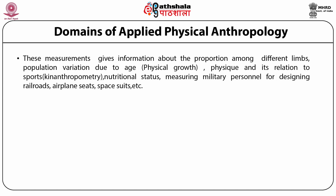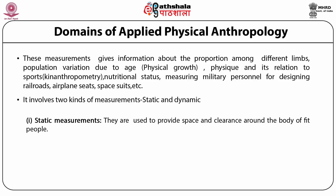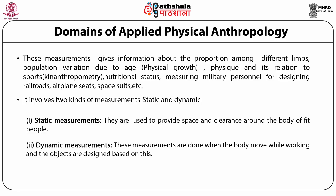These measurements give information about the proportion among different limbs. Population variations due to age, called physical growth, physique and its relation to sports — that is kin anthropometry — nutritional status, etc. are measured. They are employed in measuring military personnel for designing railroads, airplane seats, and space suits. It is divided into dynamic and static measurement. Static measurements are used to provide space and clearance around the body. In applied anthropometry, dynamic measurements are more important because measurements are done when the body moves while working and objects are designed based on this.